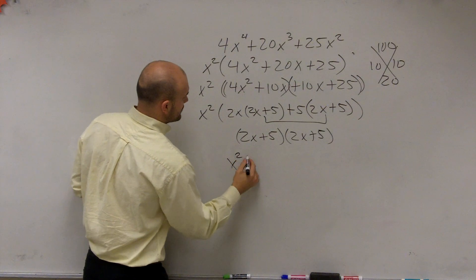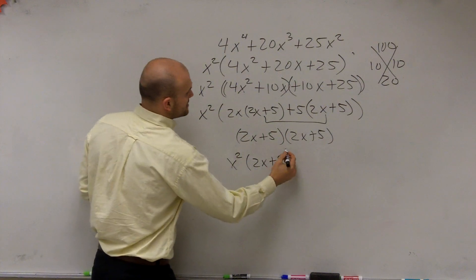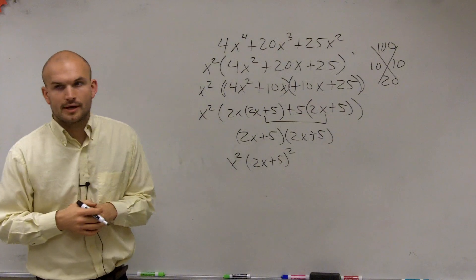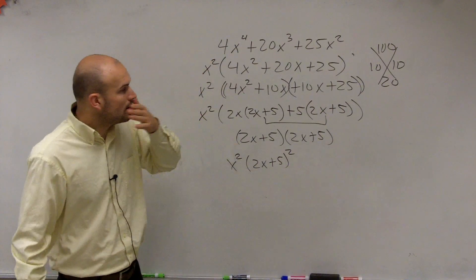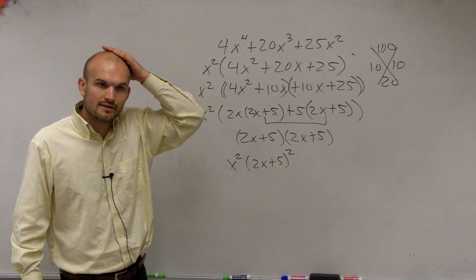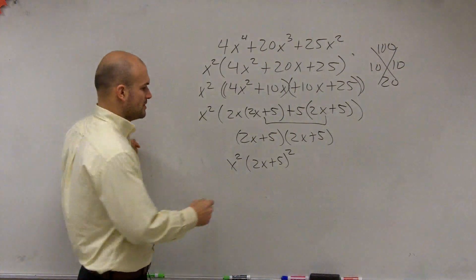So your final answer is x squared times 2x plus 5. x plus 5 times x plus 5 is x plus 5 squared. But there's another way that we can also look at this, ladies and gentlemen.